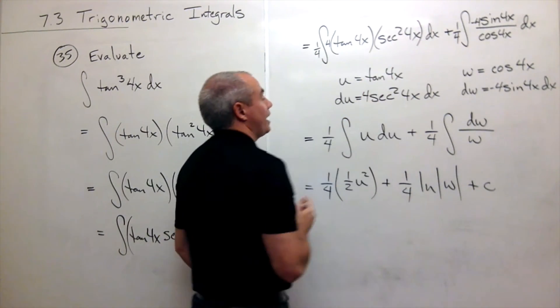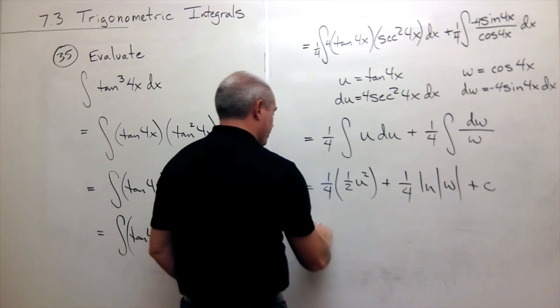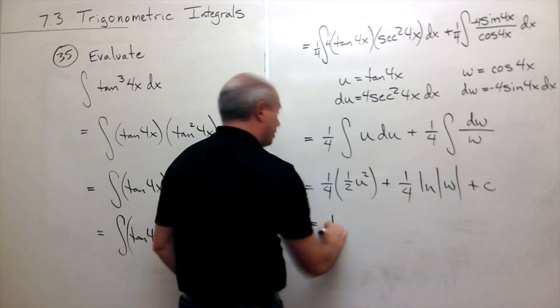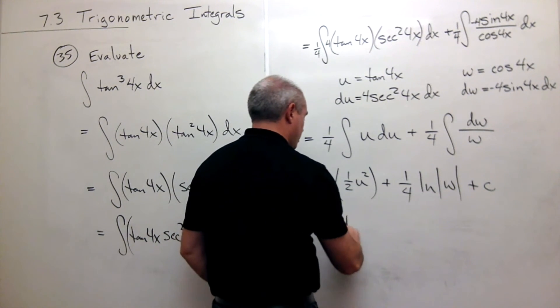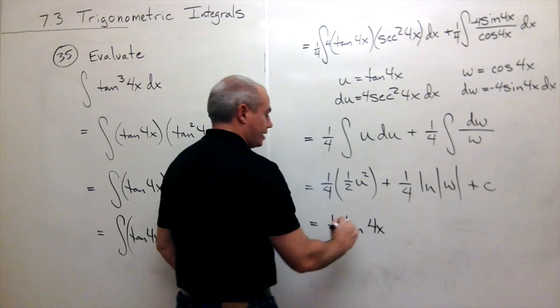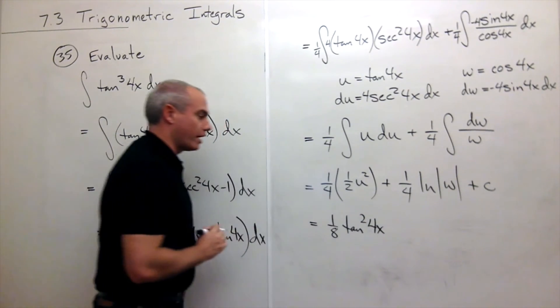So u we know is tangent of 4x. So this is going to be 1 eighth tangent of 4x quantity squared. So I'll put a square in there.